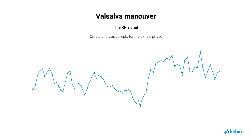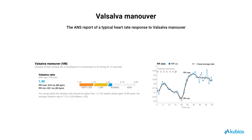It is essential to mark only the exhale phase of the Valsalva maneuver with an analysis sample when analyzing the data in QBOs HRV Scientific. On this slide, you can see a typical heart rate response to the Valsalva maneuver. The Valsalva ratio is calculated as the quotient of the longest RR interval, measured within 0 to 30 seconds following the maneuver, and the shortest RR interval, measured during or within 0 to 5 seconds after the maneuver.